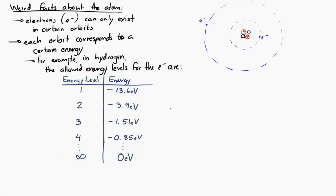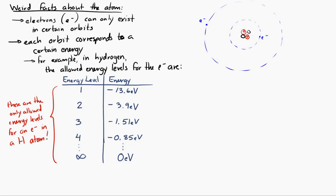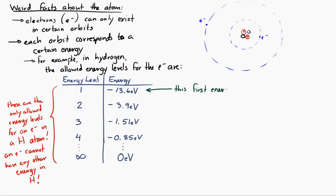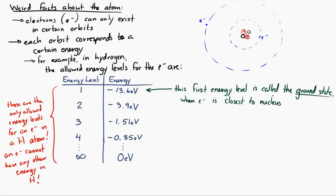First of all, I want to emphasize these energy levels are the only allowed energy levels for an electron in a hydrogen atom. The electron cannot have any other energy and be part of this atom — simply not allowed. The first energy level, with energy of negative 13.6 electron volts, is called the ground state. It corresponds to the orbit where the electron is closest to the nucleus, and that's when the electron has the least amount of energy — it's the biggest negative number.